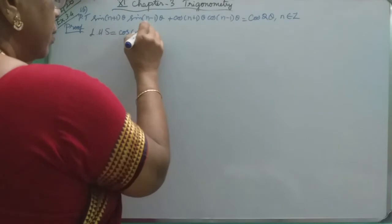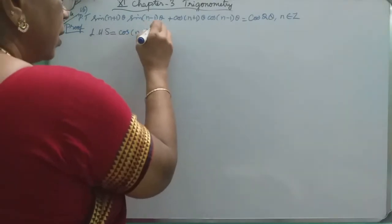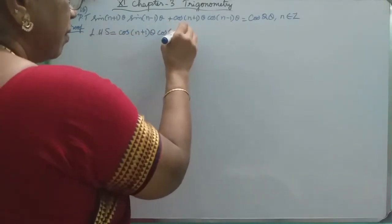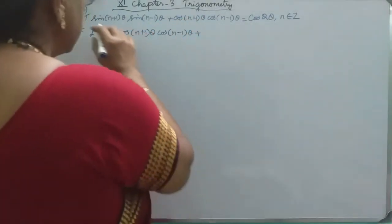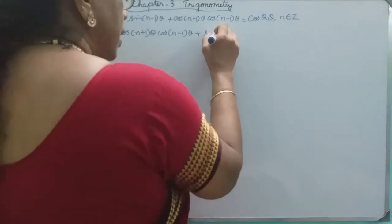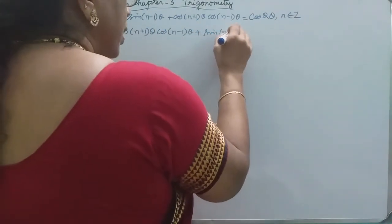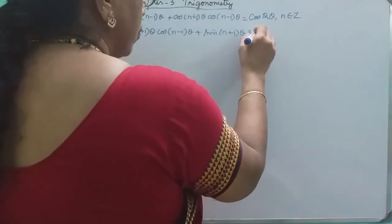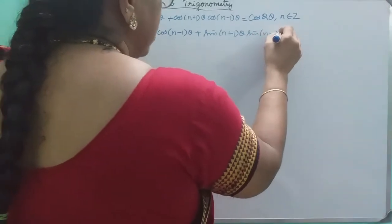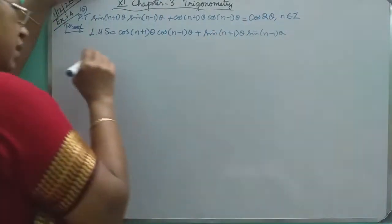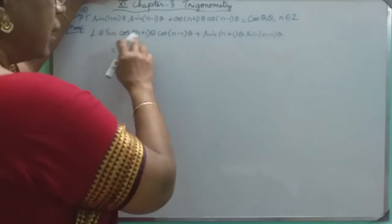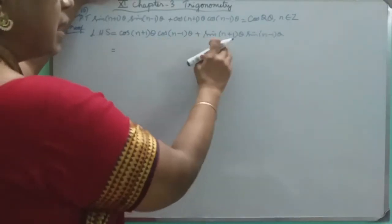Now cos of (n+1)θ into cos of (n-1)θ plus sin of (n+1)θ into sin of (n-1)θ. Here we are going to use the identity cos·cos + sin·sin.